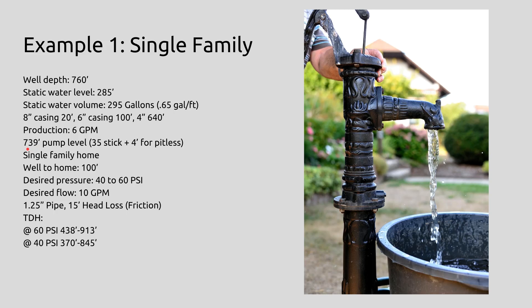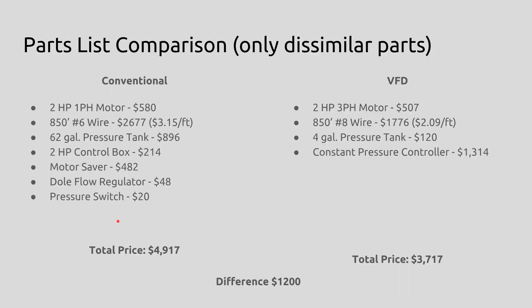We're going to put the pump at 739 feet, so it's going to be 35 twenty-one-foot sticks, and then we add four feet for the pitless depth to get us to that 739. It's a single family home. The distance from the well to the home is 100 feet. The desired operating pressure is 40 to 60 PSI, and the customer's desired flow is 10 gallons per minute. Now keep in mind this is completely made up, but I did get this information off of an actual well.